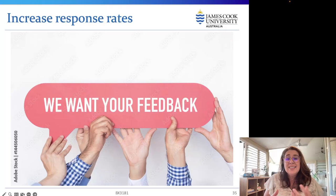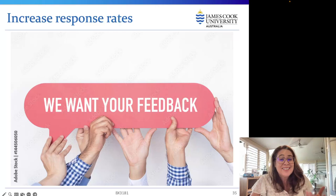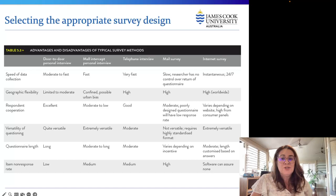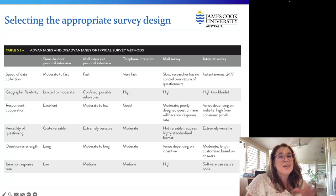Other ways to ensure questionnaires are completed include creating interesting questions or even including questions not directly related to the survey just to generate interest. There is no best form of design — each survey research design method has its own advantages and disadvantages, as summarized in table 5.3 in the textbook. Different criteria such as cost, speed, and anonymity may differ for each survey, and these need to be considered when choosing the appropriate design.